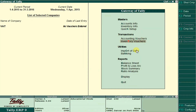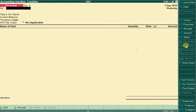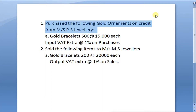Go to Accounting Vouchers and press F9 for the Purchase Voucher. We are purchasing the following: gold ornaments — 500 units at 51,000 each — on credit from PS Jewelers. But this is not a normal purchase; it is a VAT purchase. We should include the VAT.